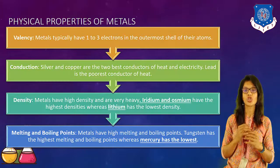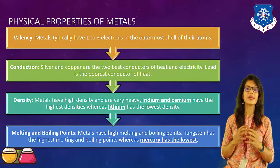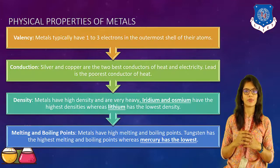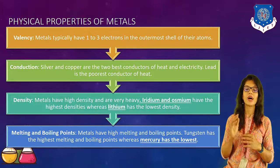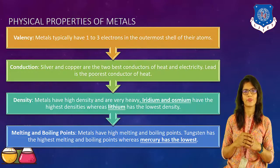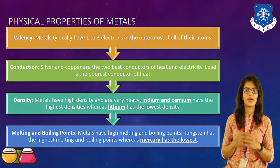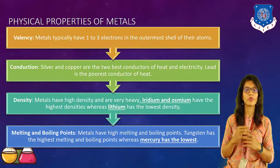The next property is conduction. Silver and copper are the two best conductors of heat and electricity. Lead is the poorest conductor of heat. Next is density — metals generally have high density and are very heavy in nature. However, iridium and osmium have the highest densities, whereas lithium has the lowest density. Metals also have high melting and boiling points. For example, tungsten has the highest melting and boiling point, whereas mercury has the lowest.